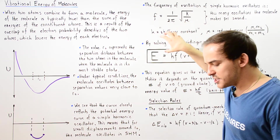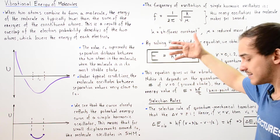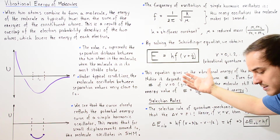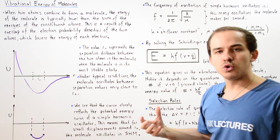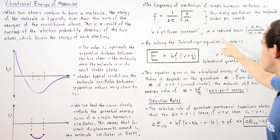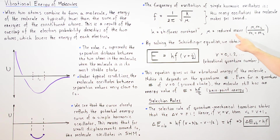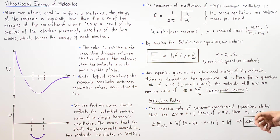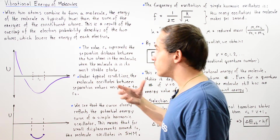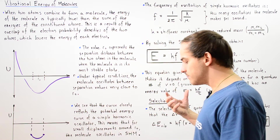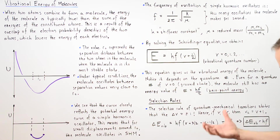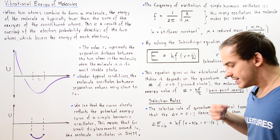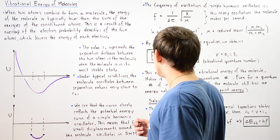In this equation, k is the stiffness constant and mu is the reduced mass. The reduced mass is equal to m1 multiplied by m2 divided by m1 plus m2, where m1 is the mass of atom 1 and m2 is the mass of atom 2 inside our diatomic molecule.